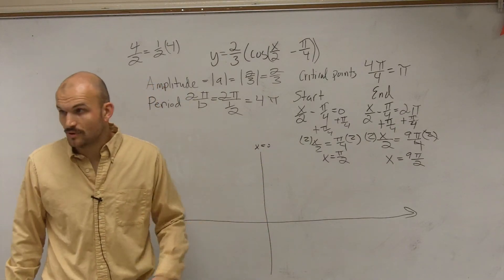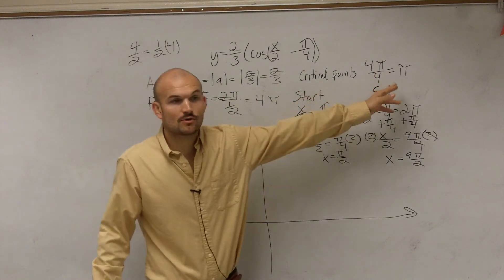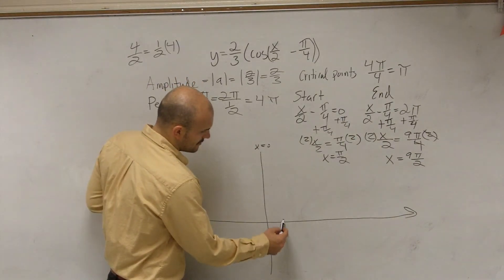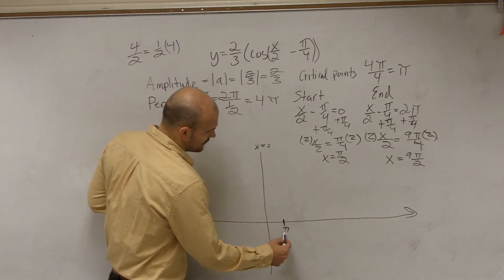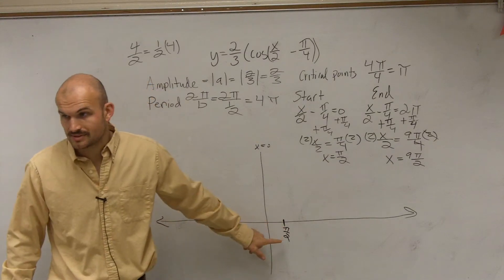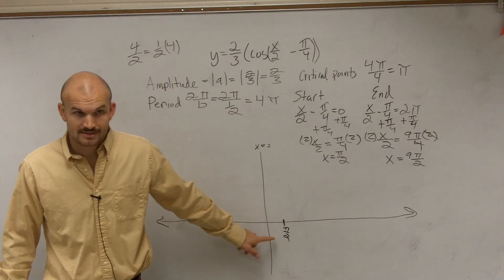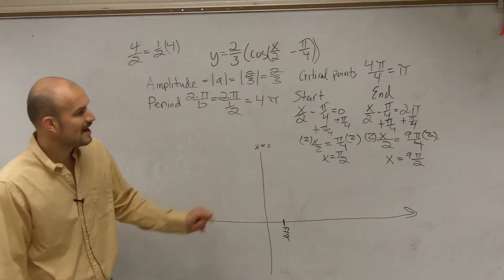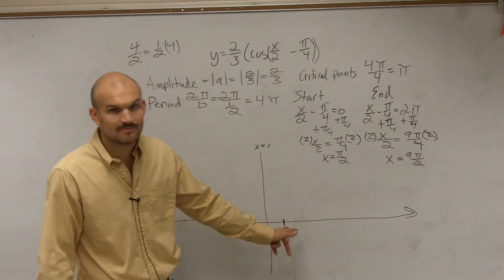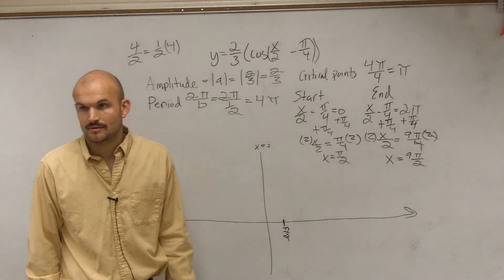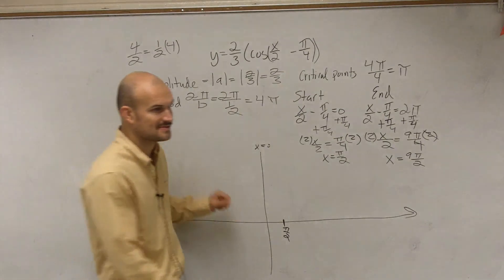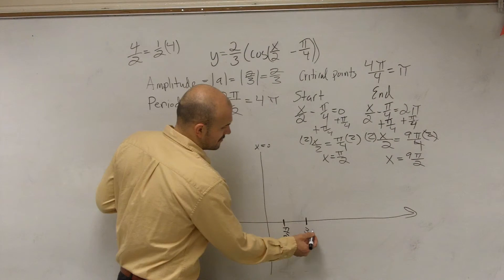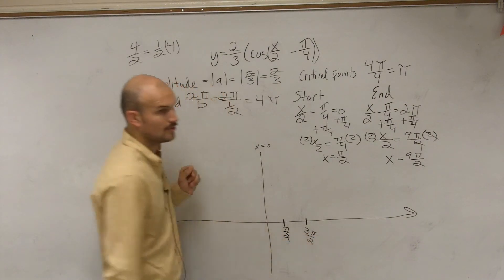Now remember, there's four critical points that we have. The distance between our four critical points is pi. However, we're going to start at pi halves. This is our starting point. So at pi halves, that's our starting point. So if I add pi to pi halves, I'm going to have what? If I add pi to pi halves,